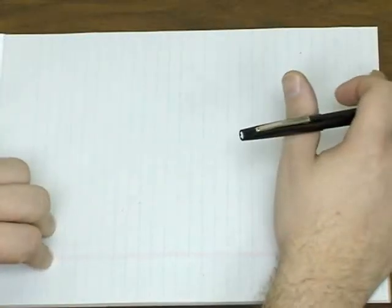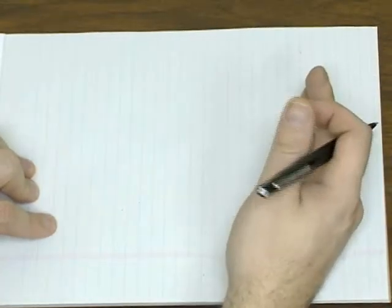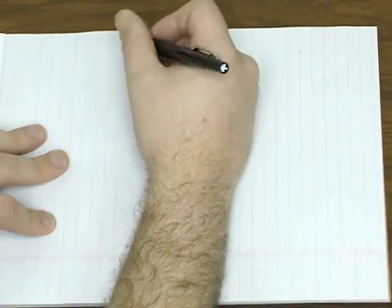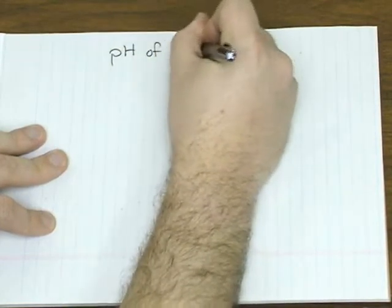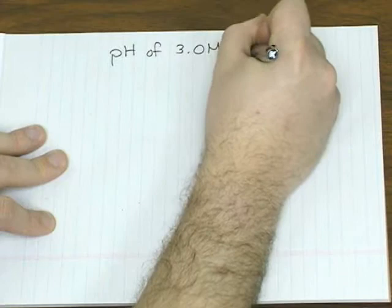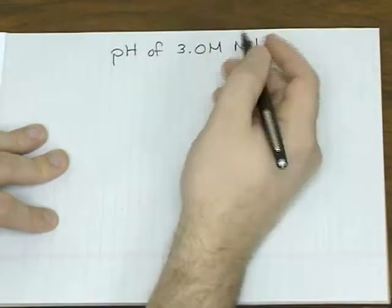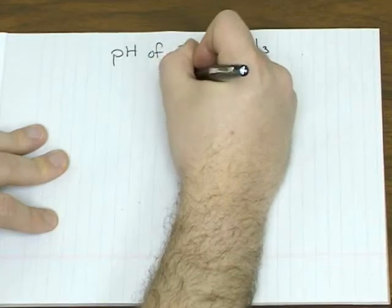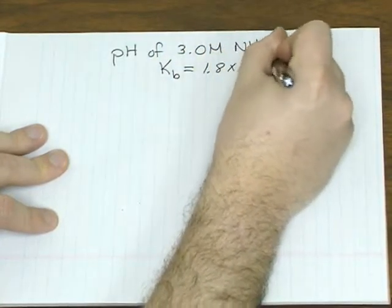And like a lot of things in acid-base equilibrium, what works with an acidic solution more or less works the same way with a basic solution. For example, let's say you want to find the pH of 3 molar ammonia, which is a weak base, and it has a Kb equal to 1.8 times 10 to the negative 5.